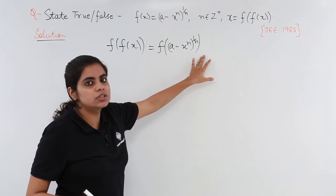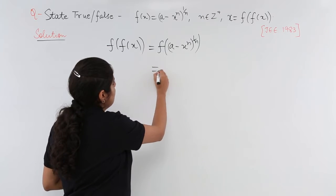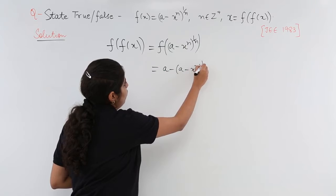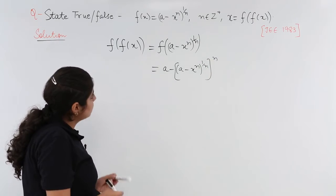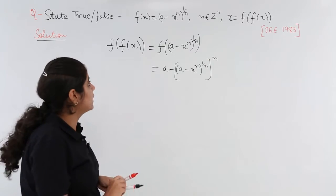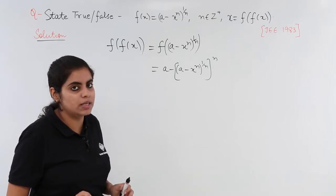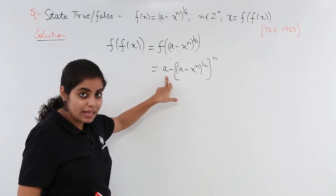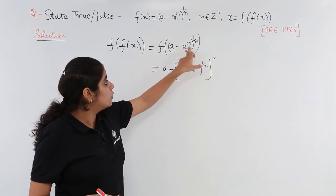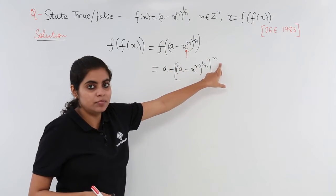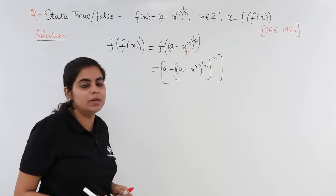Now f of the whole function means wherever I have the function value as x, I need to put the value. So that means I get a - ((a - x^n)^(1/n))^n and then the whole power 1/n. What I did was I wrote a, then wherever I obtained this x I just wrote (a - x^n)^(1/n). Now the power n which was here comes outside and the whole power 1/n also comes, that cannot be excluded, we will write it later.